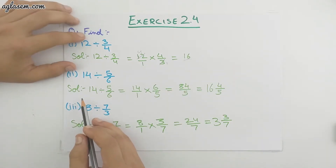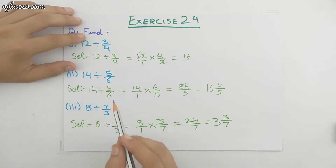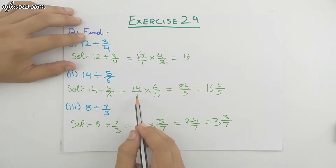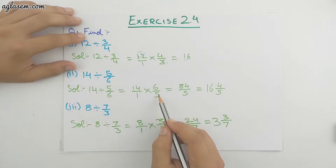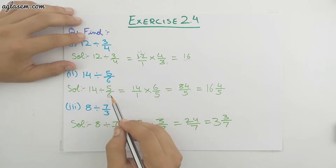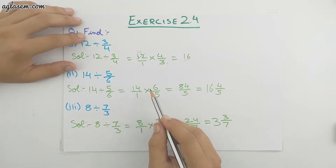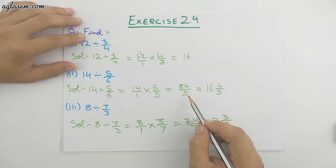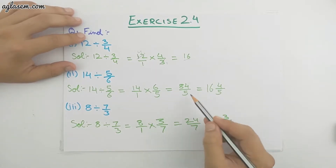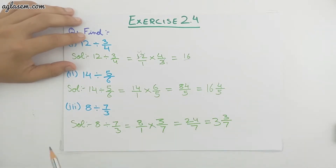The second part is 14 divided by 5/6. So 14/1 — the sign changes and the fraction 5/6 changes into 6/5. If we multiply 14/1 with 6/5 we get 84/5, which is an improper fraction. We change it into a mixed fraction, which will be 16 whole 4/5.